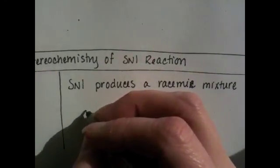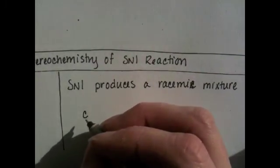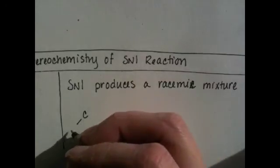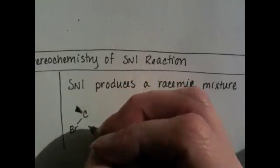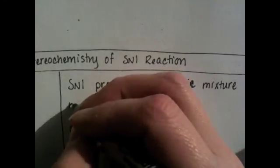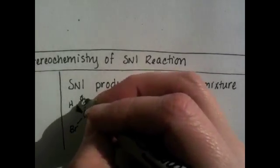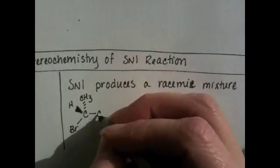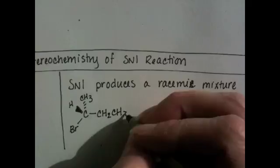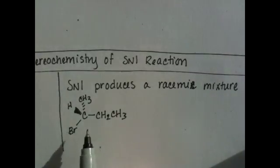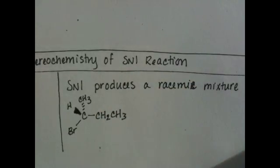For example, we're going to deal with 2-bromo-butane. This is a secondary alkyl halide, which means it can go by either SN1 or SN2. We're going to force it to go by the SN1 reaction by choosing an appropriate solvent.